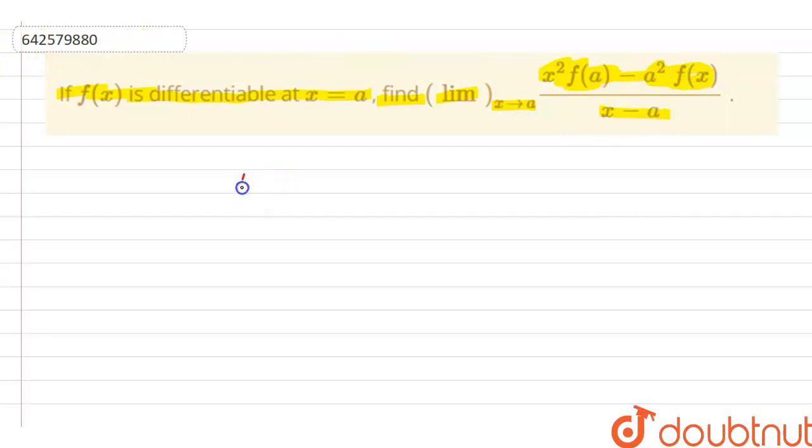In this question, we are given that limit x tends to a, here x square f(a) minus a square f(x) whole divided by x minus a.